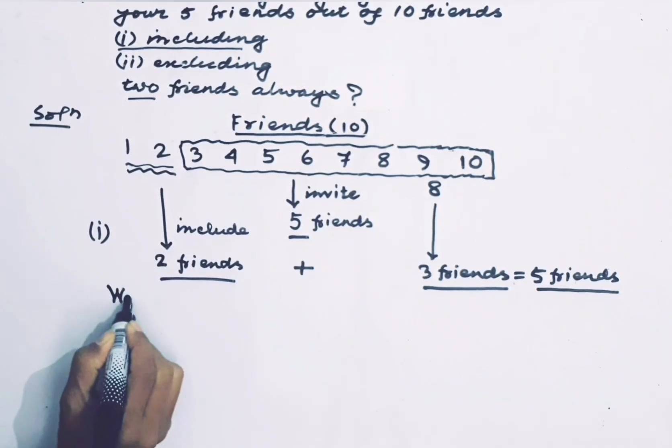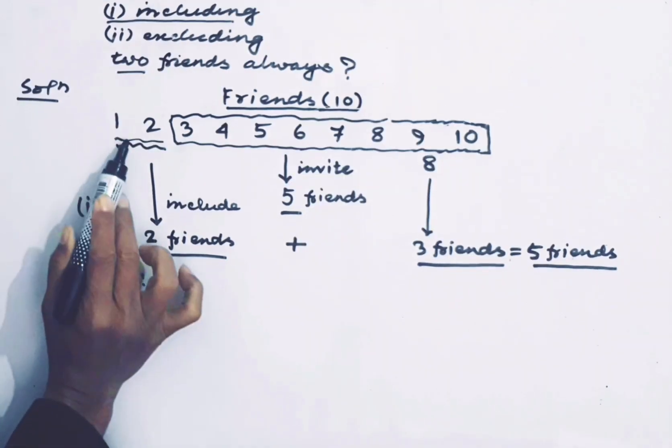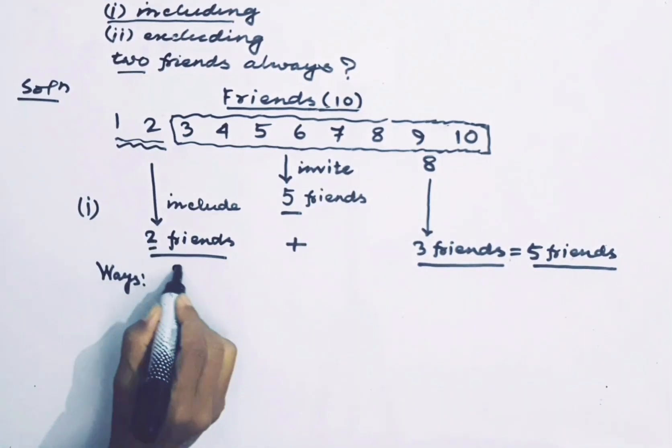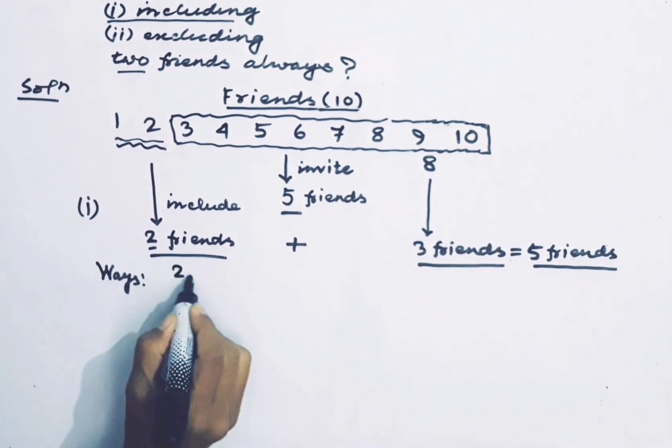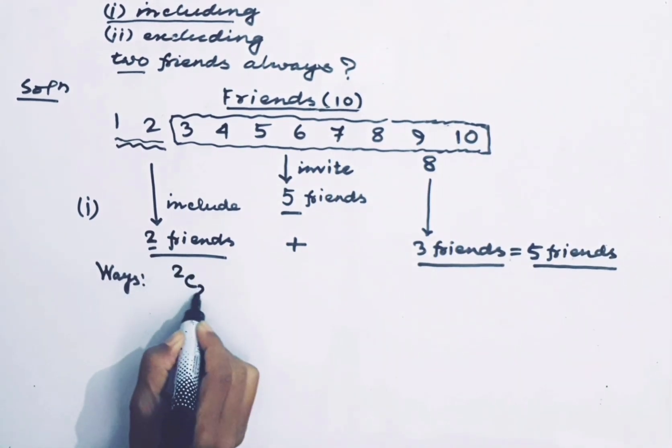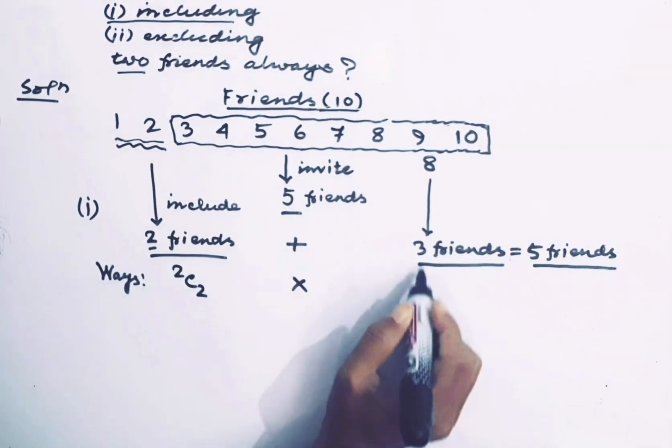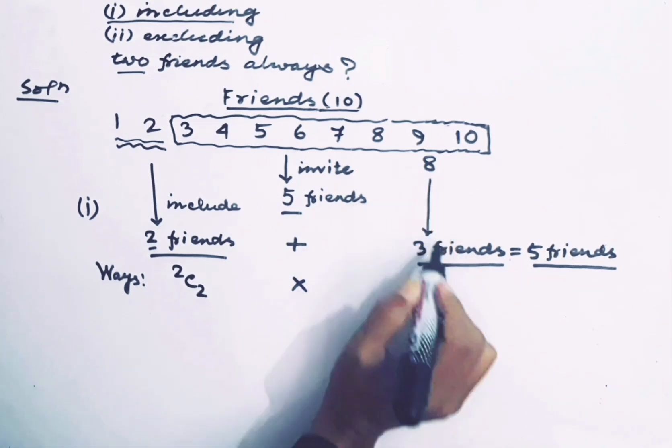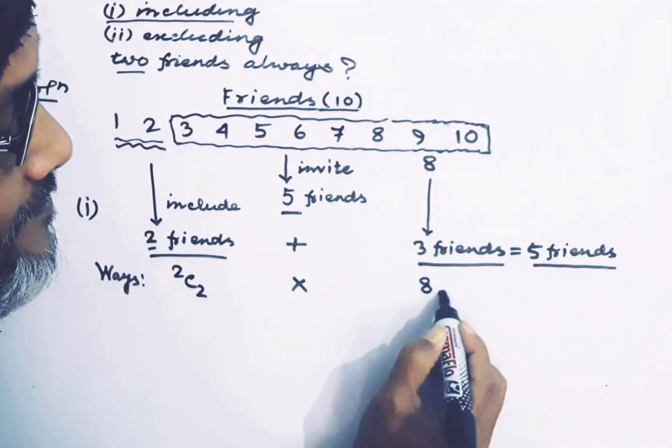Now the ways of selection. These specific 2 friends are selected in 2C2 ways. The other 3 friends are selected from the remaining 8 friends. The ways of selection are 8C3.